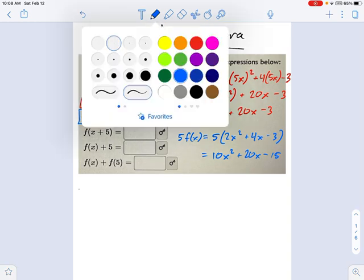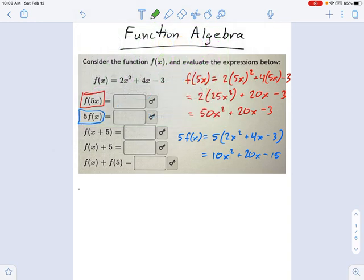Now, the next one starts to get a little more lengthy. It's going to be f of x plus 5. So what we do there is we say, okay, this is f of x plus 5. In other words, everywhere I see x in my function, I'm going to replace that with x plus 5.